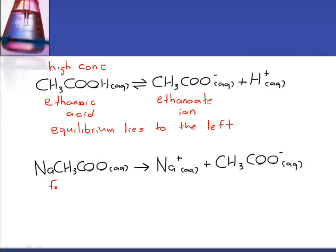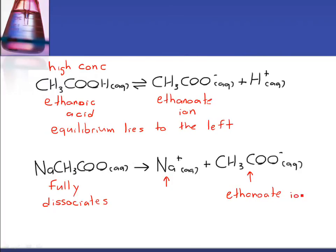Now let's look at the salt. This salt fully dissociates. A weak acid like ethanoic acid is only partially dissociated, but this salt fully dissociates — it breaks up into the sodium ion and the ethanoate ion. And because it fully dissociates, we end up with a high concentration of the ethanoate ion. So in our buffer solution we have a high concentration of the ethanoic acid and a high concentration of the ethanoate ion.